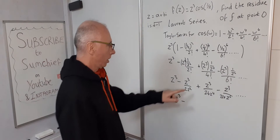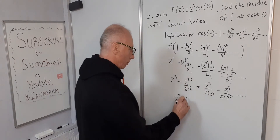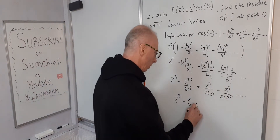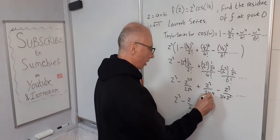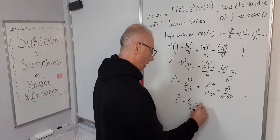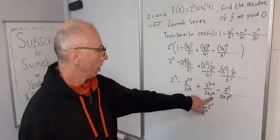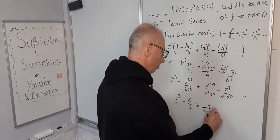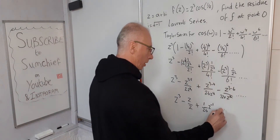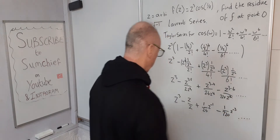So the Laurent series simplifies to: z³ − z/2 + (1/24)z⁻¹ − (1/720)z⁻³ + ... For z³/z² we get z/2, for z³/z⁴ we get z⁻¹ with coefficient 1/24, and for z³/z⁶ we get z⁻³ with coefficient −1/720, and so on.